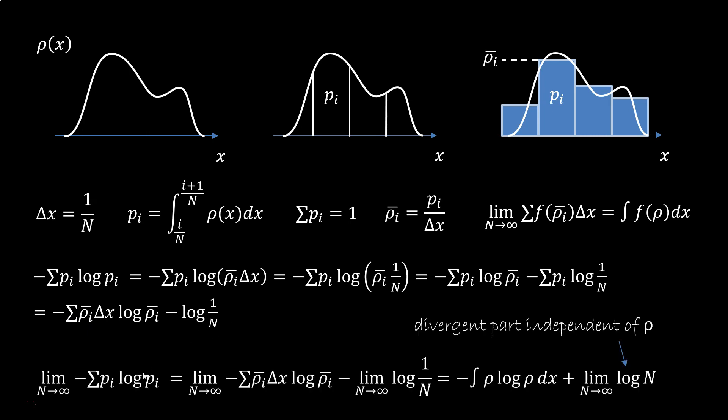We now take the limit, which is the limit of both terms separately. The first part, using the property we saw before, becomes the integral minus rho log rho. The second part, instead, diverges. Now the part that makes the entropy go to infinity does not depend on the distribution, only on the fact that we keep increasing the number of bins. And we are going to take advantage of that fact.